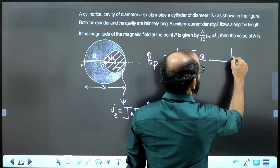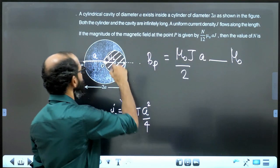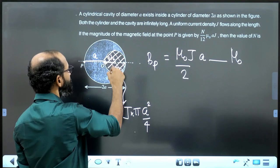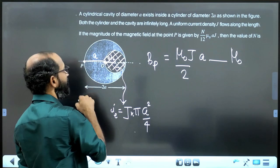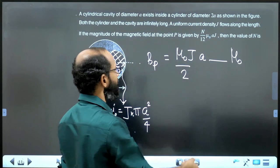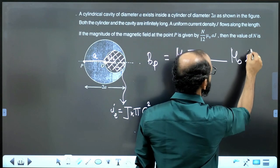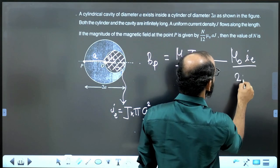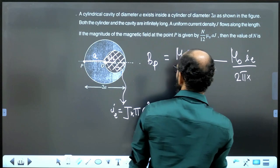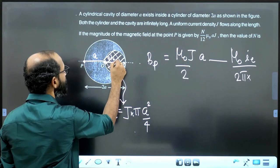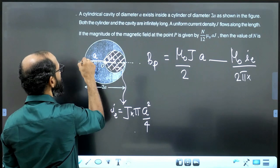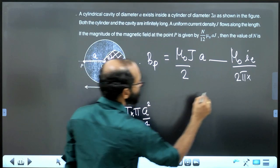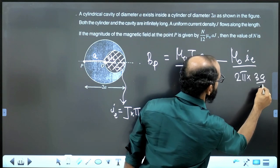Then, the formula for any exterior point, for this contribution, for this cylinder, that point P is an exterior point. So, we have to use the exterior field, mu0, I enclosed divided by 2 pi, 2 pi into radial distance. What is the radial distance from center of the small cylinder to the point P? That is A by 2 plus A. That is 3A by 2.